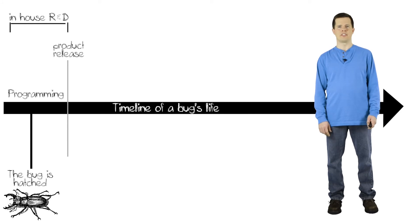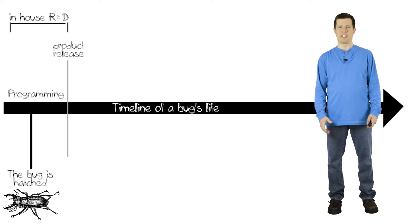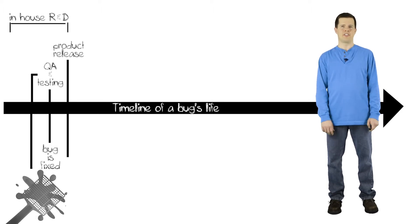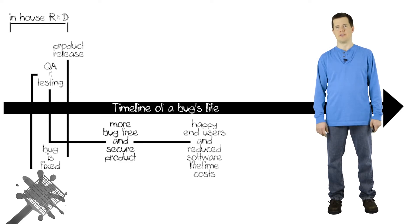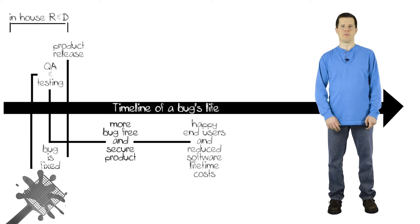The best case of a bug lifetime is somebody writes a bug — makes a mistake — and the testing team catches it. The bug gets fixed, and the product is released without the bug. This is the best possible lifetime of a bug.